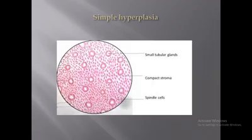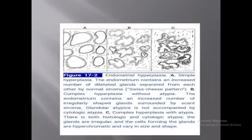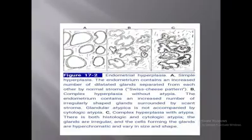In this picture you can see simple hyperplasia of the endometrium. There are multiple enlarged glands, the stroma has become compact, and you can also see spindle cells of the endometrium. In figure A, simple hyperplasia shows endometrium containing an increased number of glands embedded in the stroma. It has a typical appearance known as the Swiss cheese pattern.